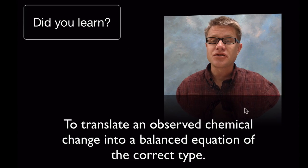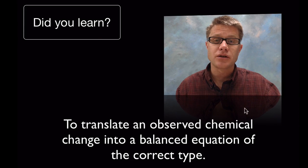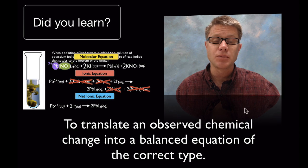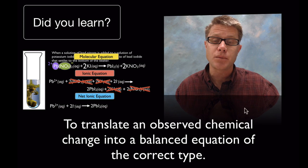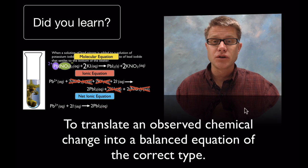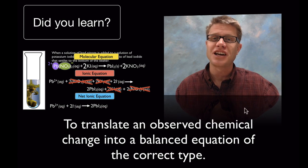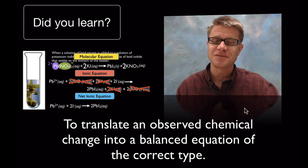Did you learn to translate an observed chemical change into a balanced equation of the correct type? Remember there are three types: molecular is the one you're familiar with; ionic is when we're breaking it apart to show all the different ions; and net ionic is when we're just showing the atoms that are part of that chemical reaction. I hope that was helpful.